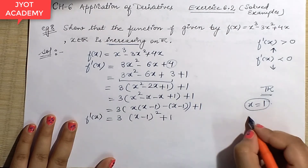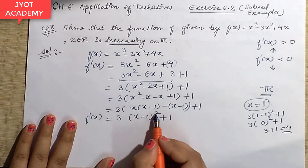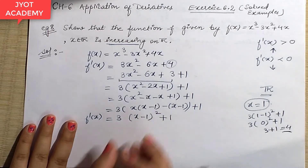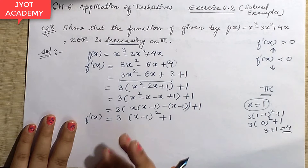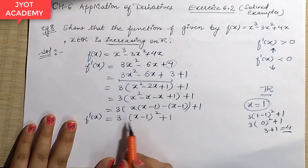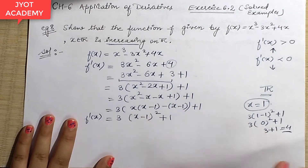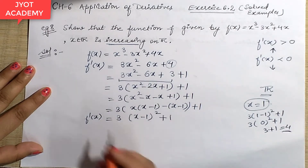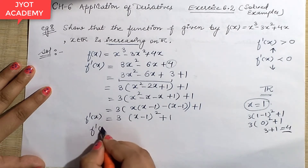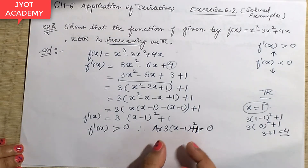Here we can see: if I add 1, the value is a positive value. And if you add a negative value, then you square it, so positive is positive. Whatever value you add, it will show the value in increasing form. That means your function value f'(x) is greater than 0 completely, and it's positive. So you can clearly write that f'(x) is greater than 0.